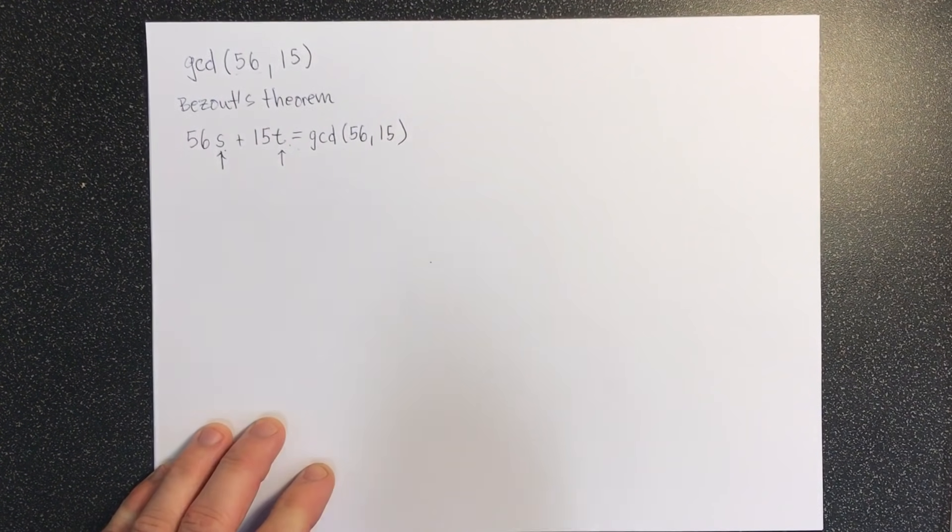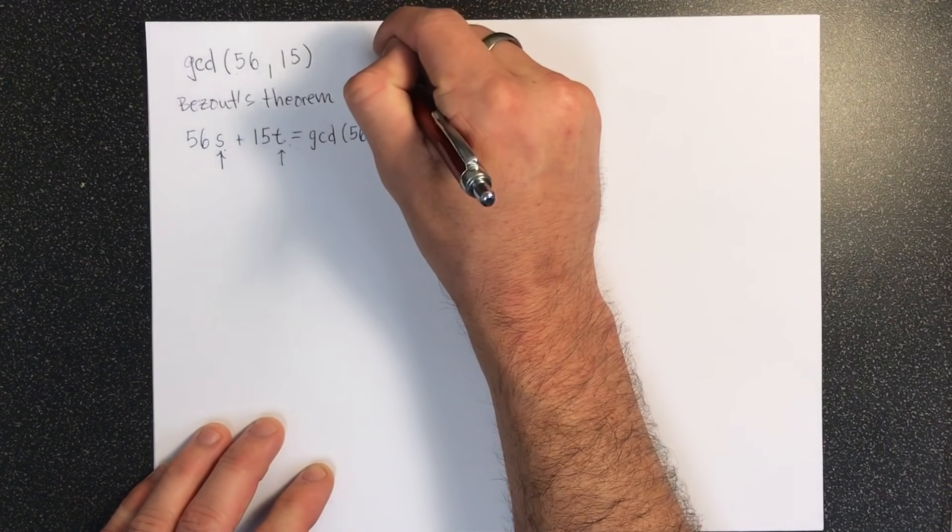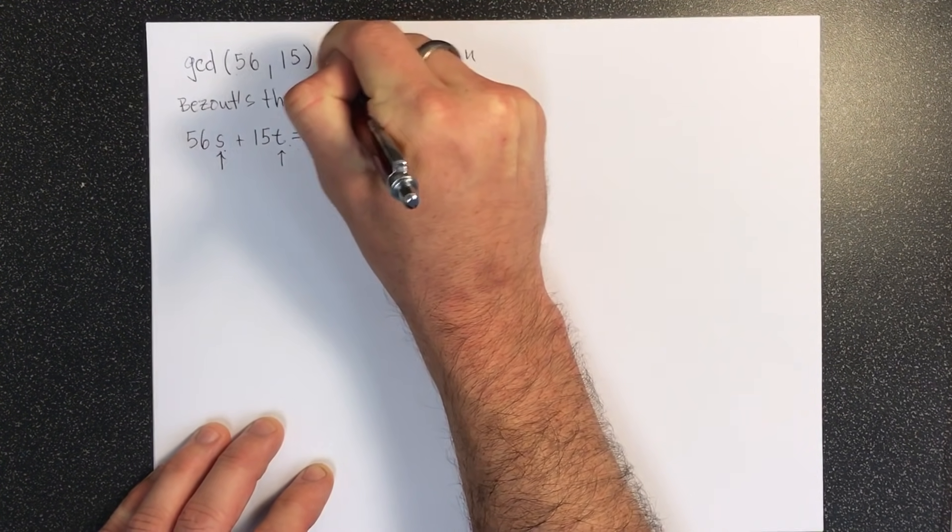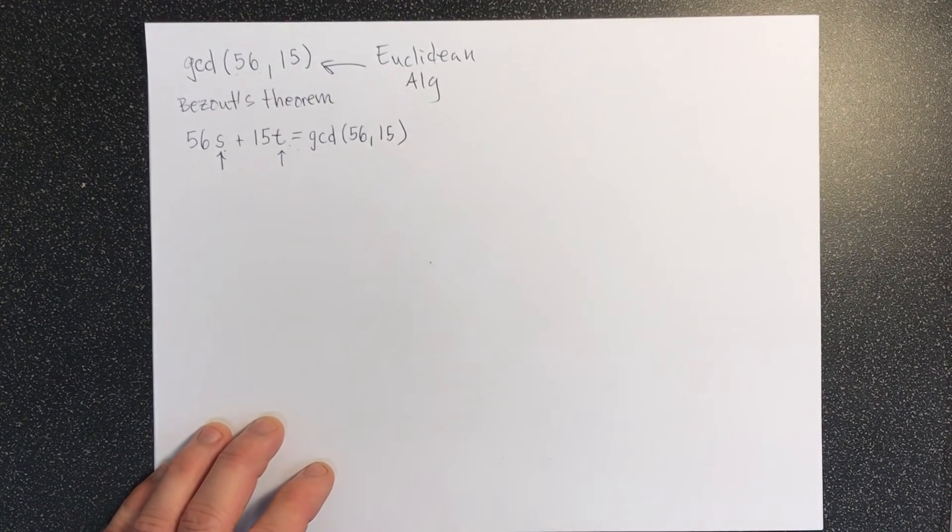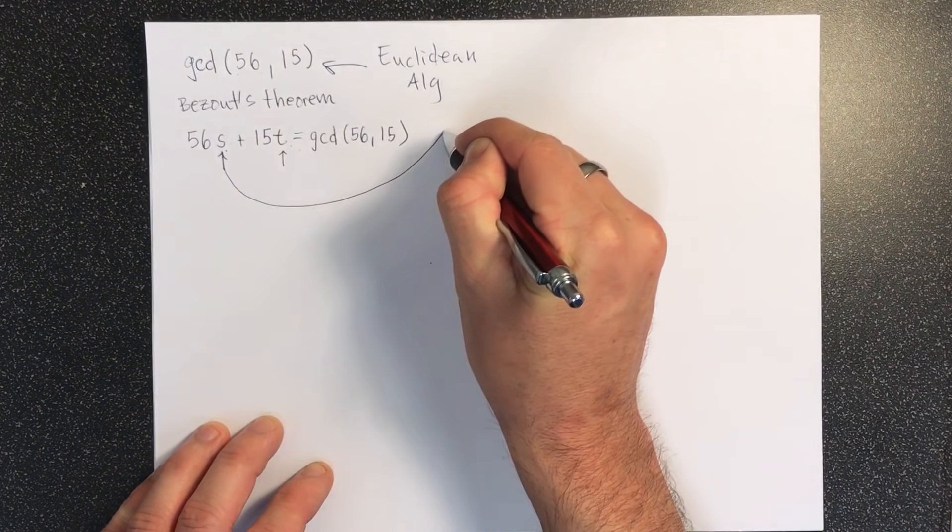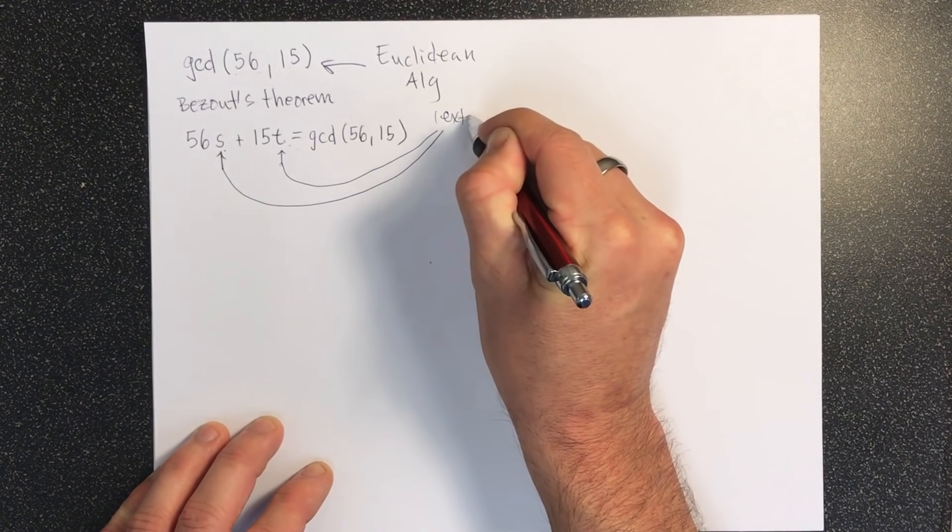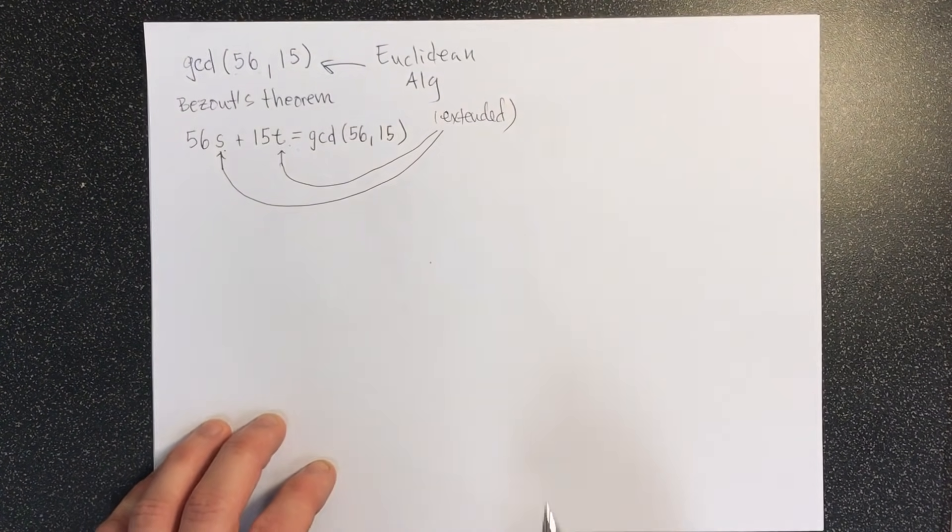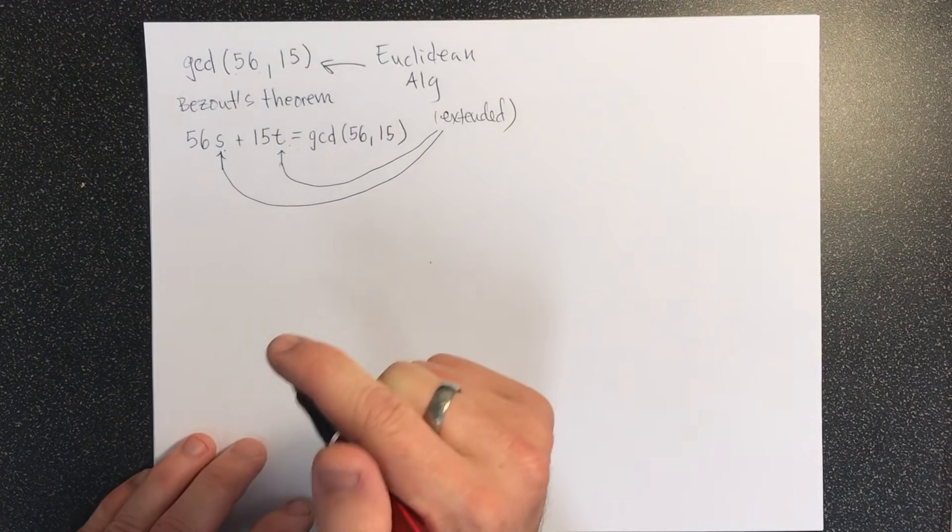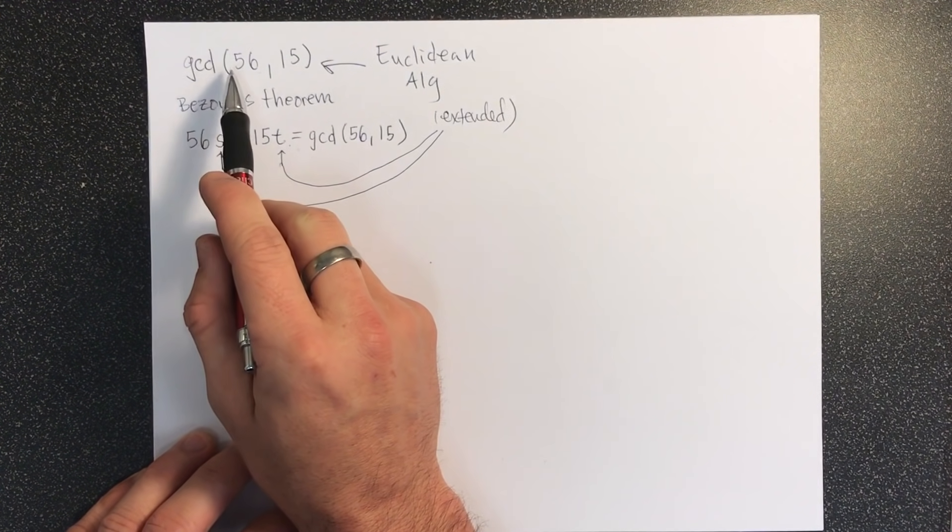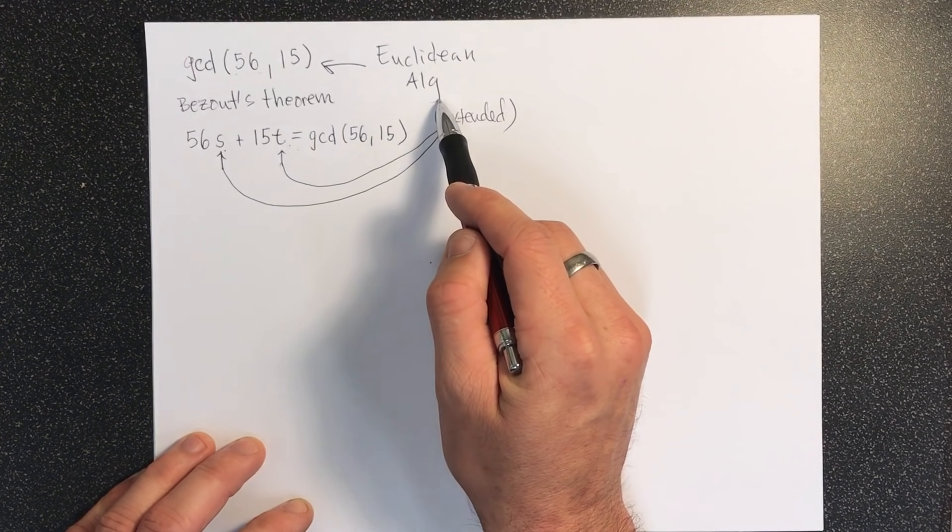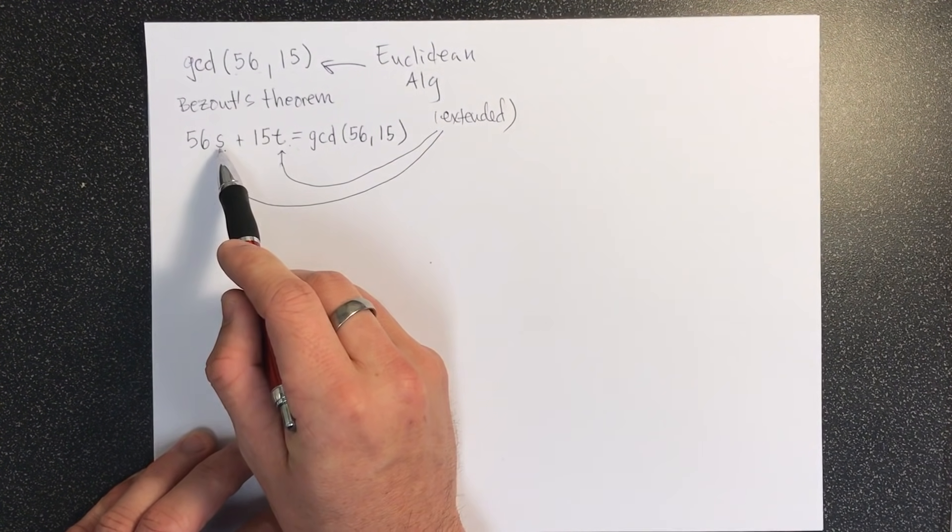The nice thing is that the normal Euclidean algorithm that calculates the GCD, you can extend it very slightly to also tell you what this s and t are going to be. So this is going to be the extended Euclidean algorithm, and it's a very simple algorithm, very easy to follow. And so what I'm going to do is I'm going to show you how to calculate the GCD of 56 and 15 using the extended Euclidean algorithm, so at the end we will also know the values of s and t.